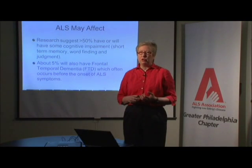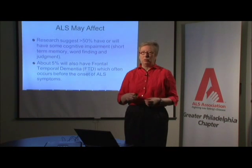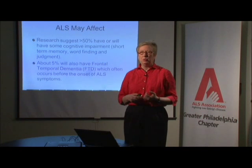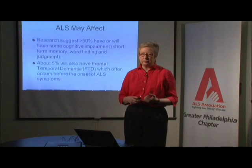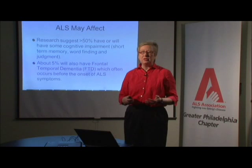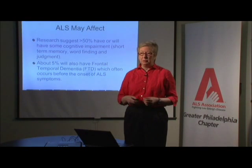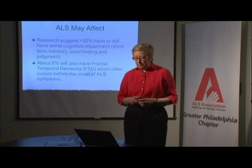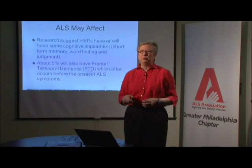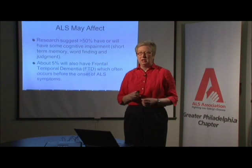ALS is progressive — the person will get worse and worse. With frontotemporal dementia, the person will get worse and worse mentally. This person will have an extreme change in personality, disinhibited behavior, lack of judgment — they'll basically do whatever they want to do, almost act like kids, and need that kind of supervision. About 10% of all people who have frontotemporal dementia eventually develop symptoms of ALS, so there is a genetic connection between the two.